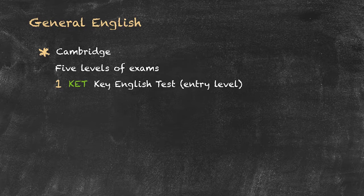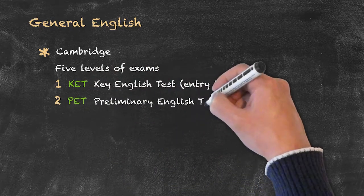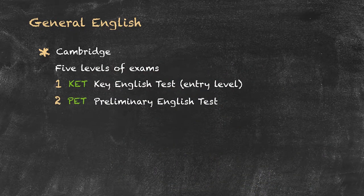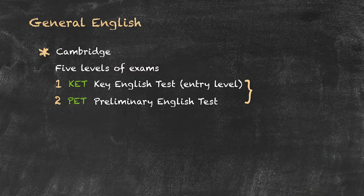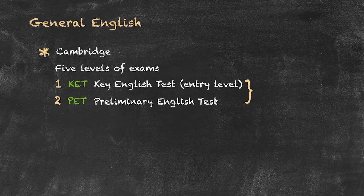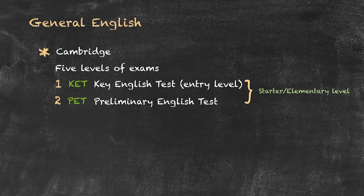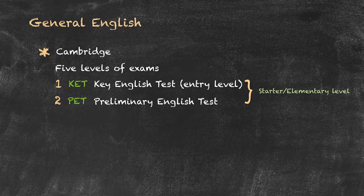Moving on from the Key English Test is the second level known as PET, which stands for the Preliminary English Test. These two are entry level exams, and in terms of the five levels that we often have in a school—starter, elementary, then pre-intermediate—these two exams would cover the starter and elementary level within a school, getting us up to perhaps the pre-intermediate level at the very most.